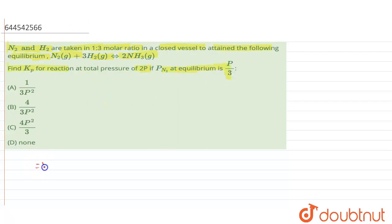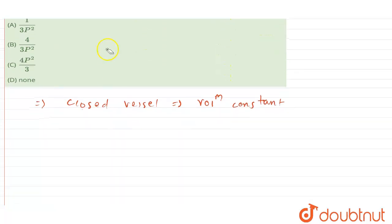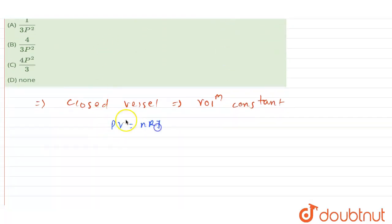If you see the hint given in this question, it is a closed vessel. So what happens in a closed vessel? The volume is constant. So once the volume is constant, according to PV equals NRT, if you see the volume being constant, you can relate that pressure is directly proportional to the number of moles.